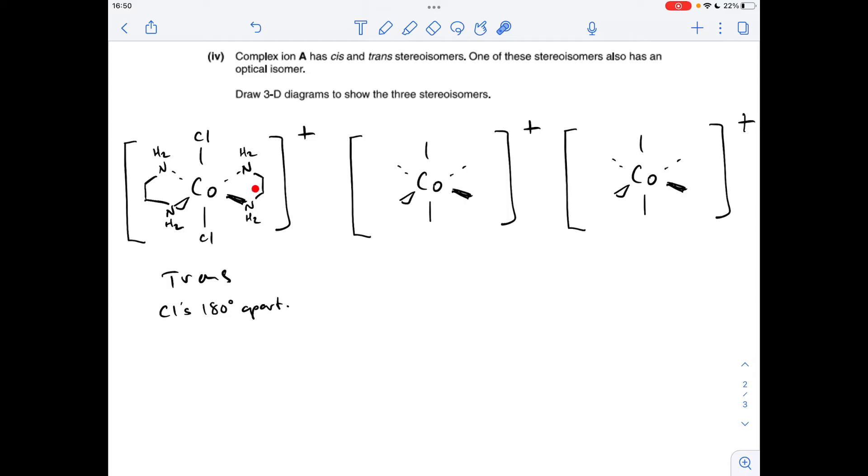Moving on to the cis isomer, I need the two chloride ions to be 90 degrees apart. I'm going to put them there and there—as long as they're 90 degrees apart it's fine. That means my bidentate ligands are here and here, and there and there.